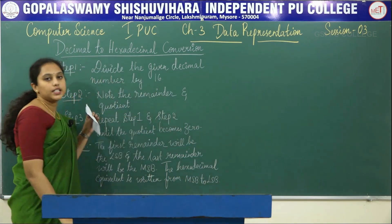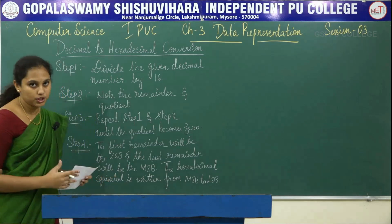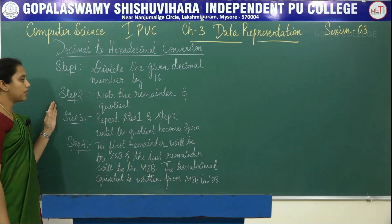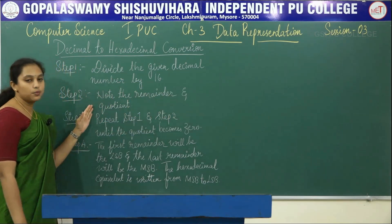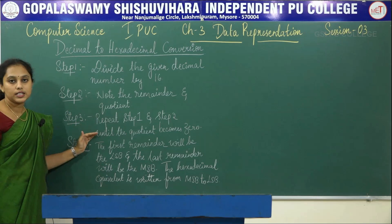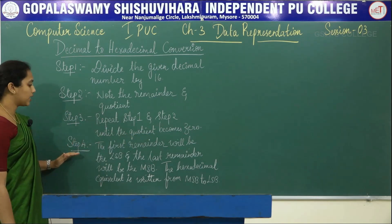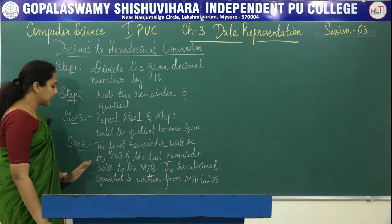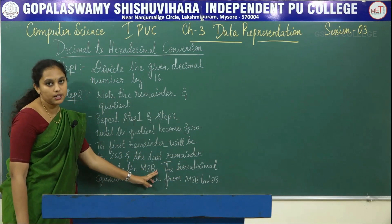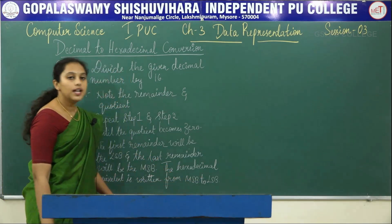So these are the steps to follow while performing decimal to hexadecimal conversion. Step 1: divide the given decimal number by 16. Step 2: note down the remainder as well as the quotient. Step 3: repeat steps 1 and 2 until the quotient becomes 0. Step 4: the first remainder is the LSB and the last remainder is the MSB. The hexadecimal equivalent is written from MSB to LSB.